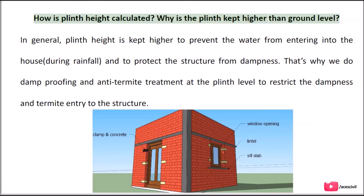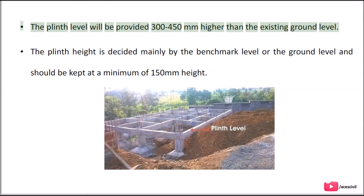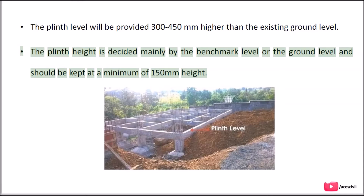Plinth height is kept higher to prevent water from entering the house during rainfall and to protect the structure from dampness. That is why damp proofing and anti-termite treatment are done at the plinth level to restrict dampness and termite entry. The plinth level is provided 300 to 450 mm higher than the existing ground level, and should be kept at a minimum of 150 mm height.